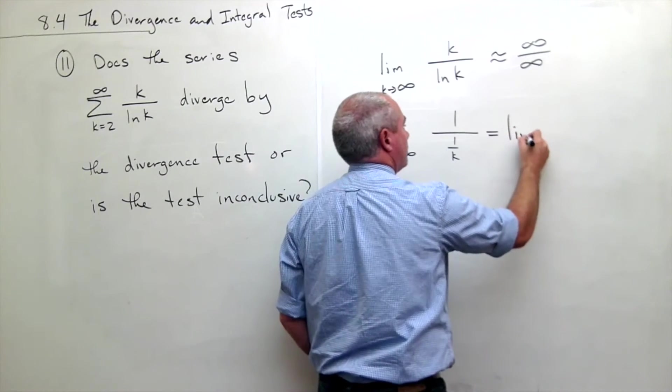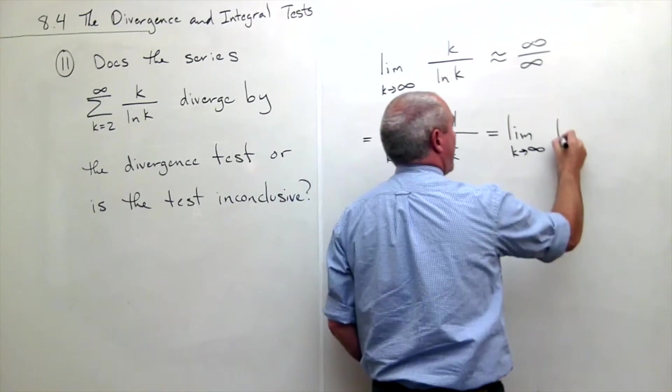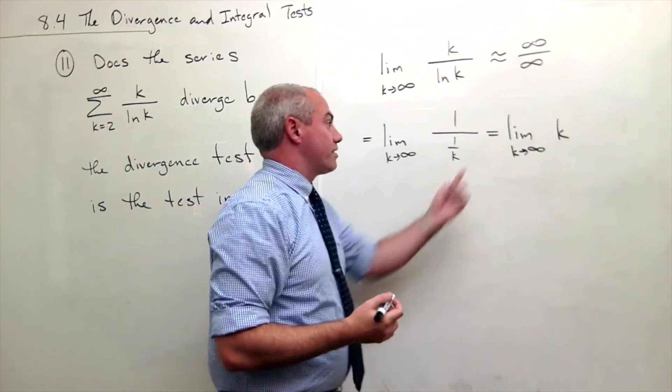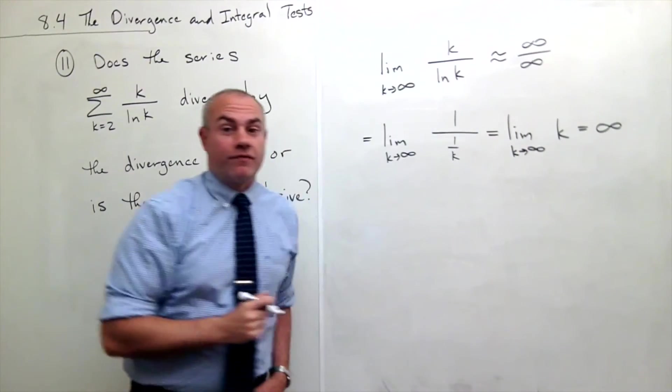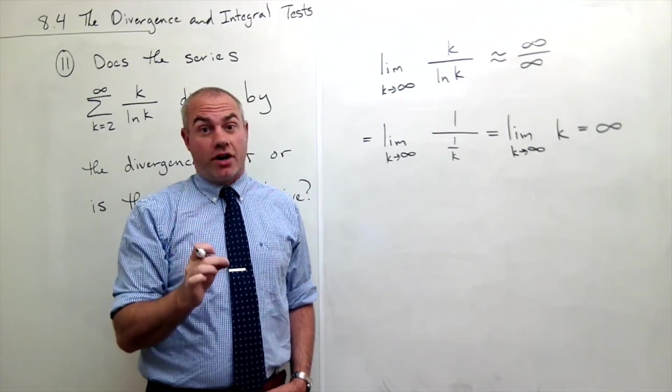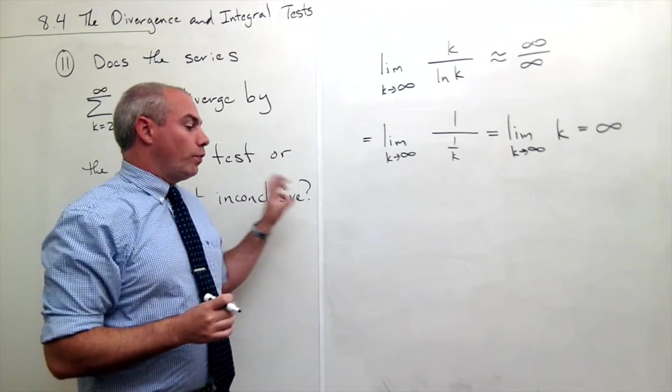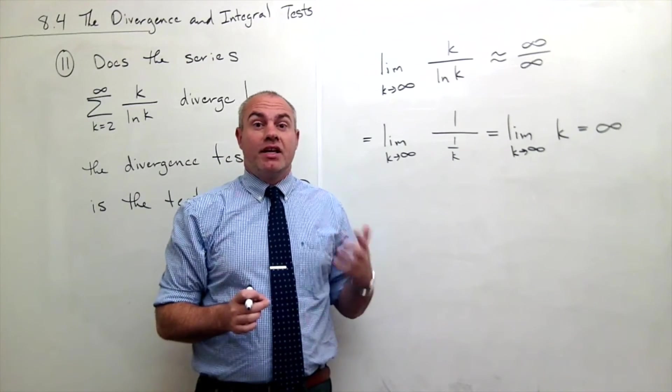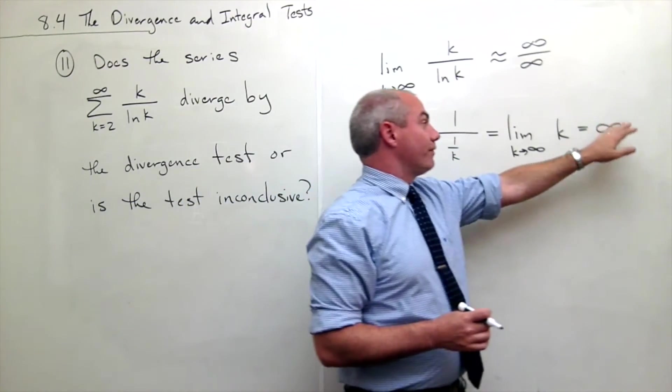have the limit as k goes to infinity of k. And of course, the limit as k goes to infinity of k is positive infinity. Positive infinity is not zero. The only way that we get inconclusive is if I actually get a limit of zero. In this case, I get a limit of infinity,